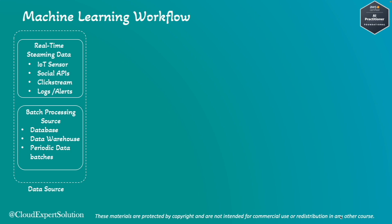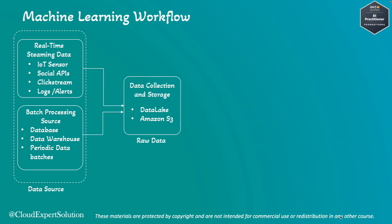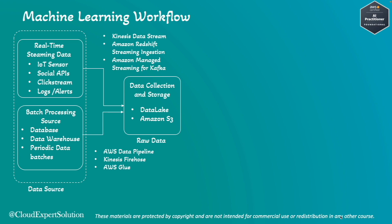Once we have identified the data sources, the next step is data collection and storing the raw data. For data storage, you can use a data lake or Amazon S3. To collect real-time streaming data, AWS provides multiple services: you can use Kinesis Data Streams, Amazon Redshift streaming ingestion, or Amazon Managed Streaming for Apache Kafka (MSK). To collect batch data, you can use AWS Data Pipeline, Kinesis Data Firehose, or AWS Glue.